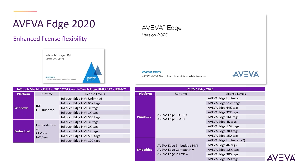It's very simple — you don't have to make conversions between different tag levels. They are the same tag levels. So customers that were using Indusoft Web Studio with 16,000 tags can migrate their project to Aviva Edge 16,000 tags. It's just a simple version upgrade, with no analysis or calculations needed.